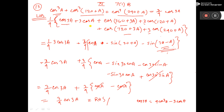Now, 1 by 4 into this, this and this I have written here. Now, this one — you see — 1 into 90 plus 30, and this is 3 into 90 minus 30. If you break in this way, then this one will come this, and this one will come this.